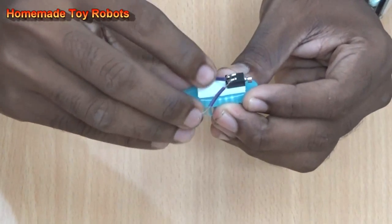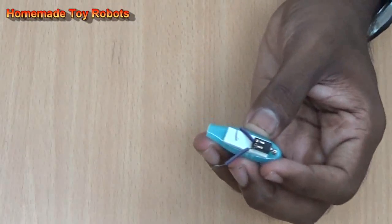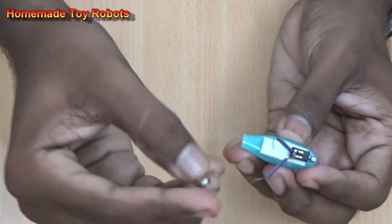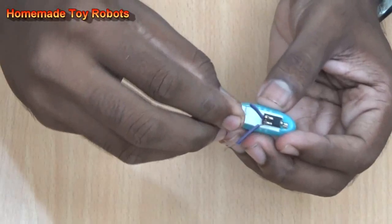Now stick one side wire and take the button cell and stick it above the wire.